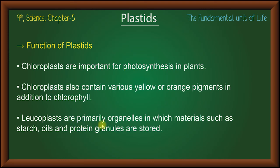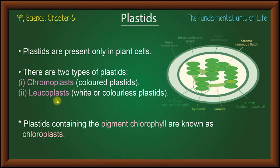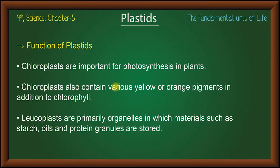Leucoplasts are primarily the organelles in which materials such as starch, oil, protein, and granules are stored. There are chromoplasts, which are colorful, and leucoplasts, which are colorless and used for storage.